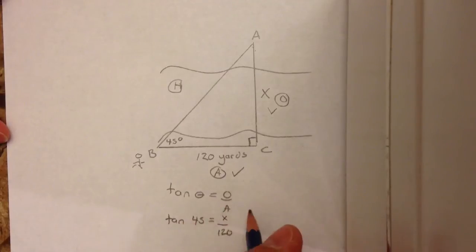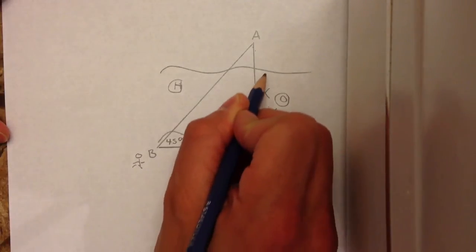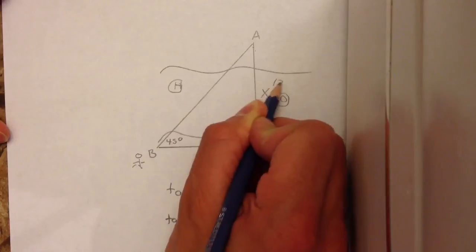Now the weird thing is when you put tan of 45 in your calculator, you actually get the number 1. So it's not a mistake. The tan of 45 is 1. And the other side is just still x over 120. So to get x by itself, you just bring the 120 up. And it would be 1 times 120 equals x. So you actually get the same answer. So this side is actually also 120.